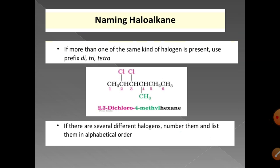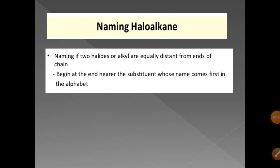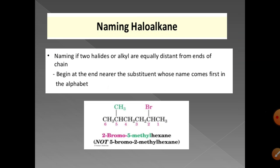If several different halogens are present, number them and list them in alphabetical order. If two substituents — such as methyl and chlorine — are equally distant from both ends of the chain, begin numbering at the end nearest the substituent whose name comes first alphabetically. For example, the correct name is 2-bromo-5-methylhexane, not 5-bromo-2-methylhexane.